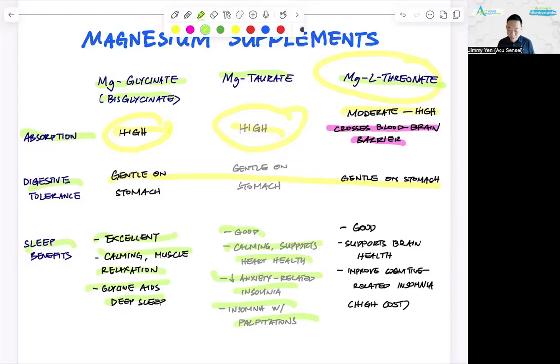And the last one, magnesium L-threonate. It is also good, not excellent. It supports brain health, improves cognitive related insomnia. So if you have brain fog, groggy brain in the morning, then you might want to consider magnesium L-threonate because it can cross the blood brain barrier, which can also help cognitive thinking. Alzheimer's, if you have some of those going on, memory loss, magnesium L-threonate could be your choice.